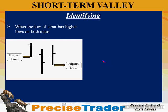I'm going to give you rules to identify when a short-term valley has been seen. A short-term valley is identified when the low of a bar has higher lows on both sides. After seeing a peak and the price falling down, we do not know when the market has turned until we see a short-term valley confirmation.